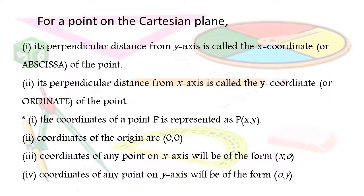Coordinates of the origin are (0,0). Coordinates of any point on the x-axis will be of the form (x,0). Coordinates of any point on the y-axis will be of the form (0,y).